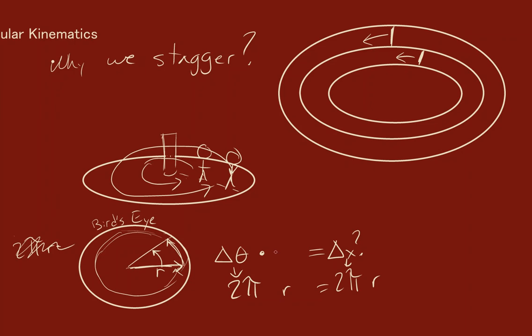So the angular displacement for an object moving in a circle, if we know the radius of that circle, we can figure out the translational displacement or the linear displacement or the distance if we've made multiple circles, right? So that's essentially why we stagger starts. We want to make this the same for everybody. So that is angular displacement versus translational or linear displacement.